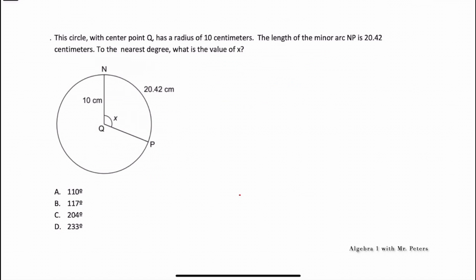Looking at this next problem, they're asking us not for the arc length but for theta — the degrees that will give us this arc length. We know the arc length is 20.42 and we have a radius of 10 centimeters. The equation we're going to use is: arc length = (theta / 360) × 2πr. What we're looking for is theta.